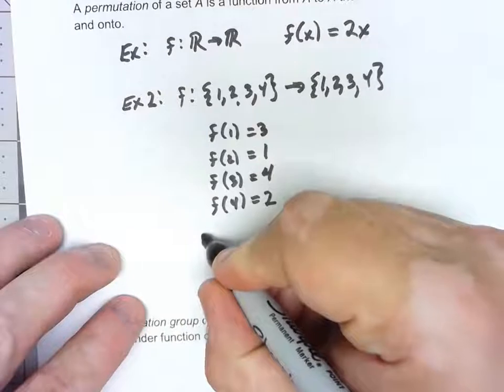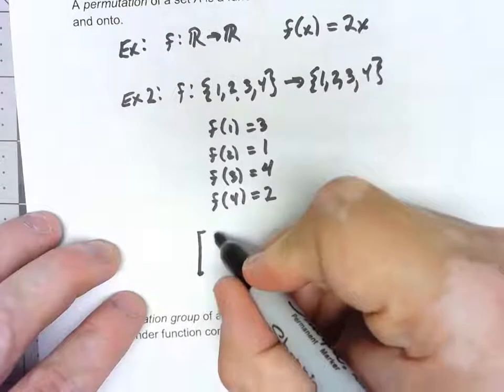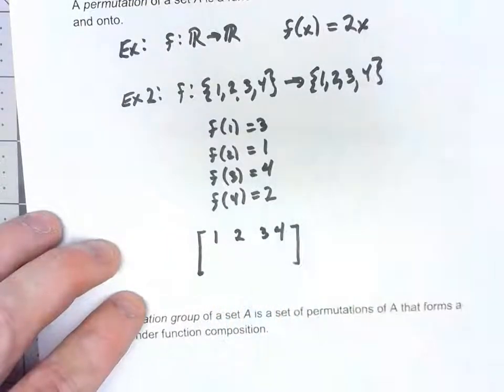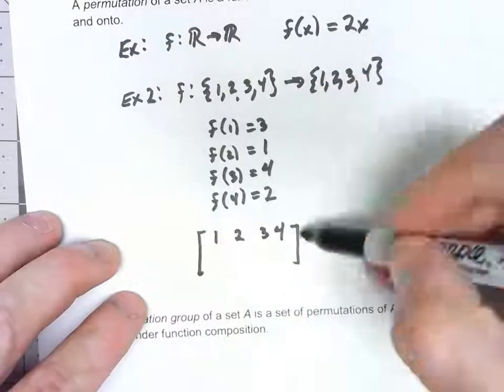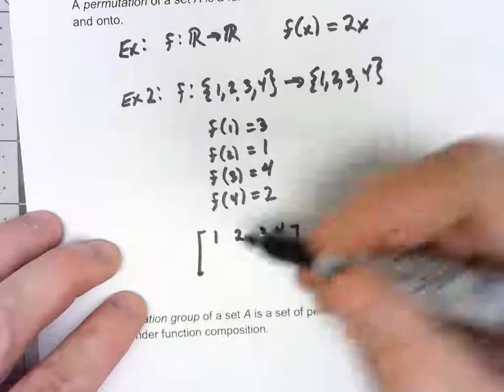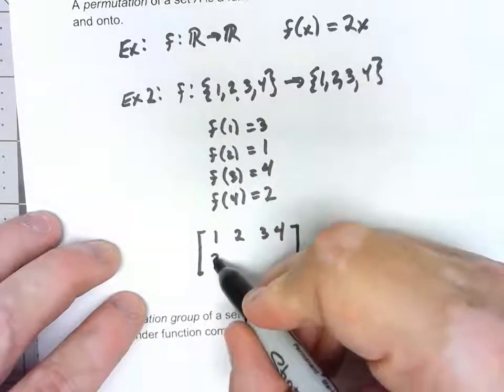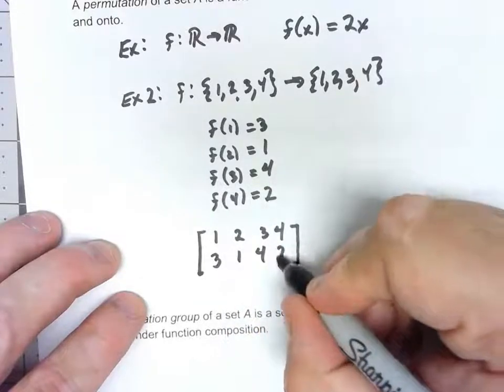We're going to write it as kind of a matrix. And so the top, we're going to have our elements of our set in order, and then the bottom will be what it maps to. So f(1) is 3, f(2) is 1, f(3) is 4, f(4) is 2.